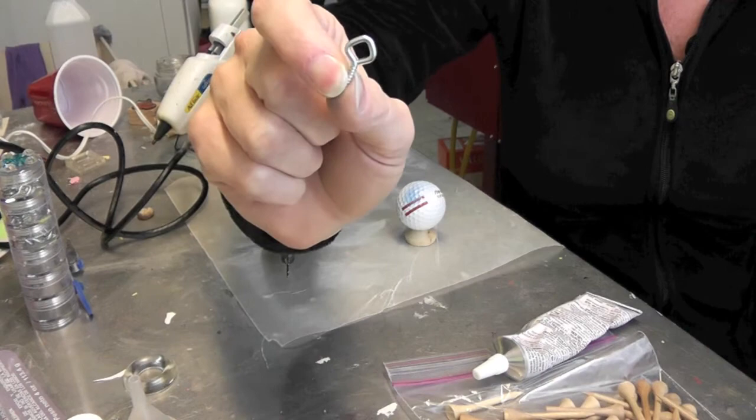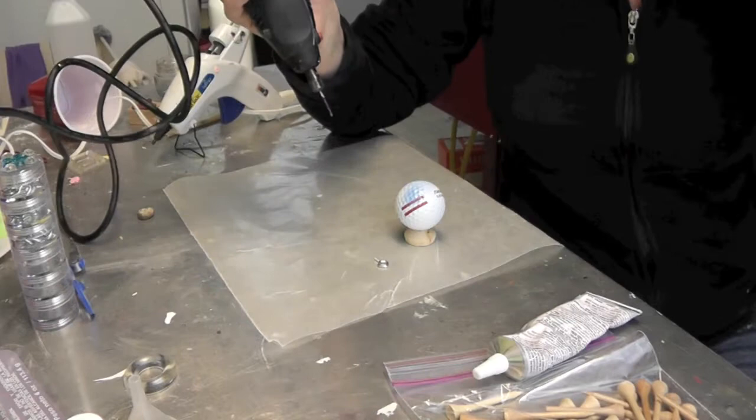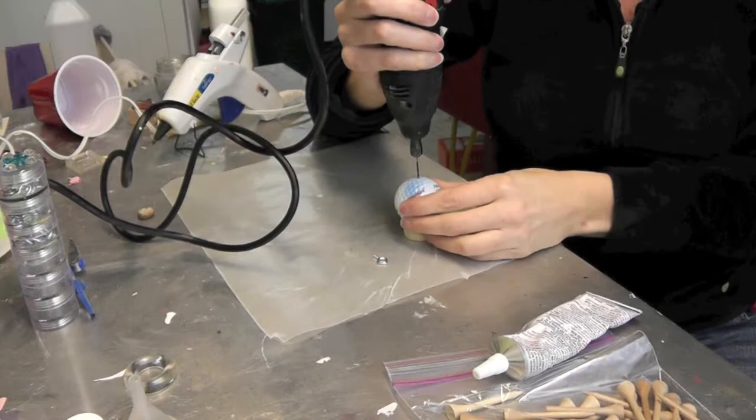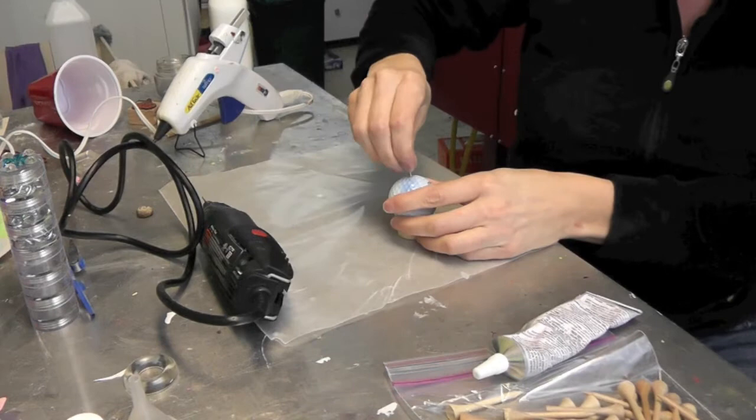The first thing you're going to need is this eye screw and I'm going to drill a hole. I'm going to put on my safety glasses and then I'm going to drill a hole really anywhere on the ball and all you really need to do is get it started.